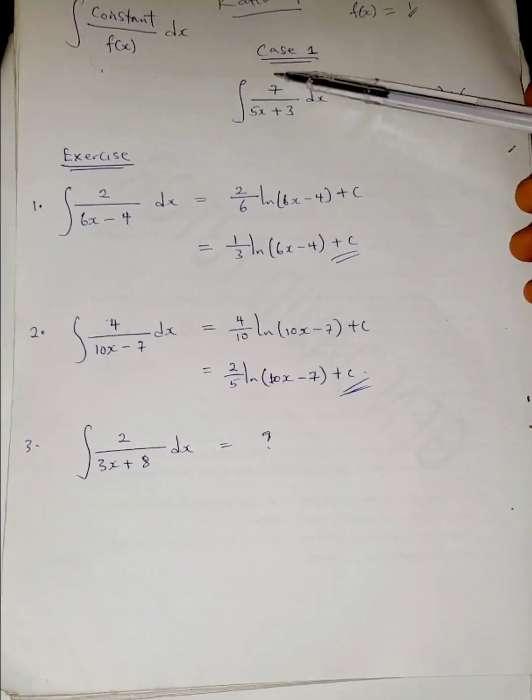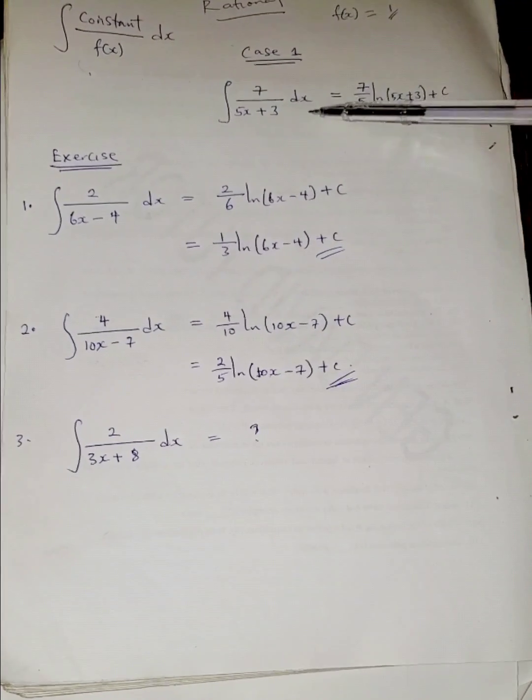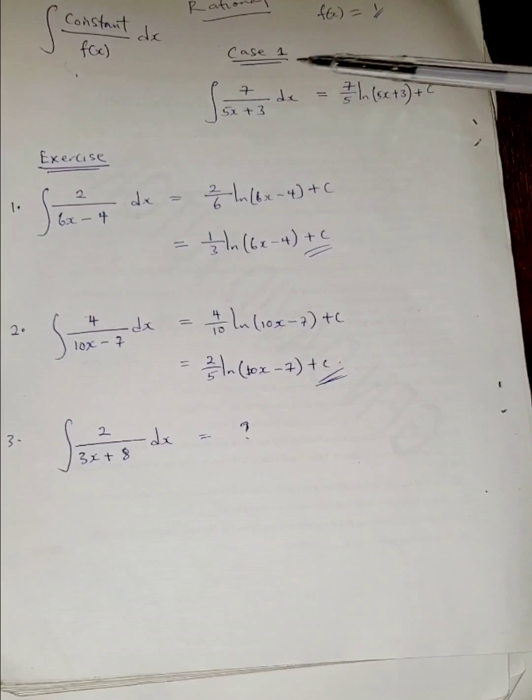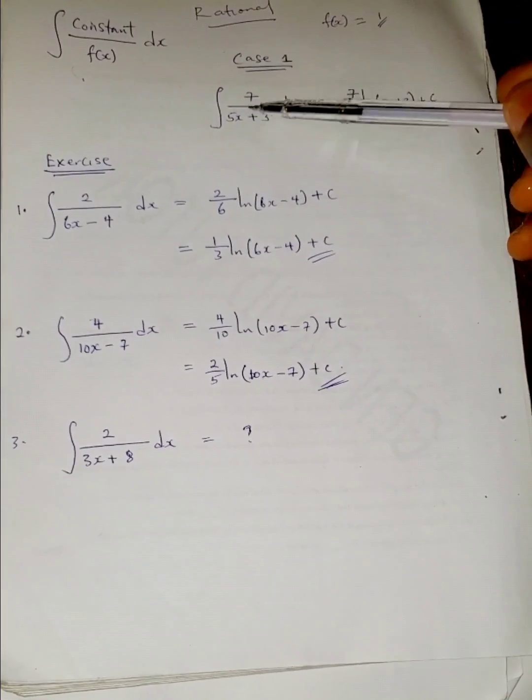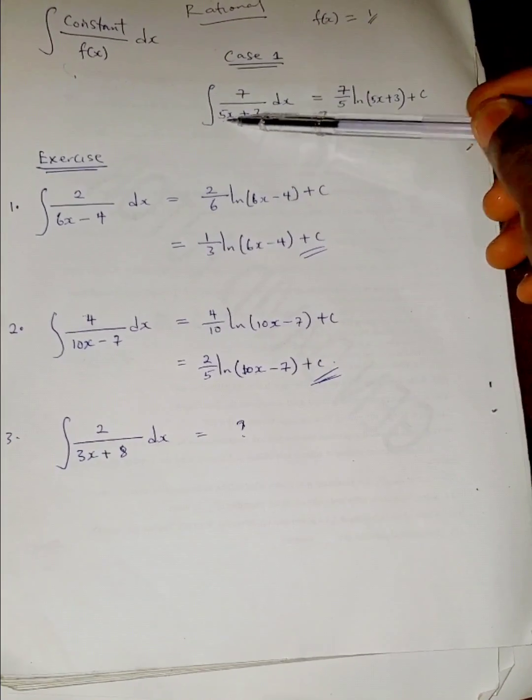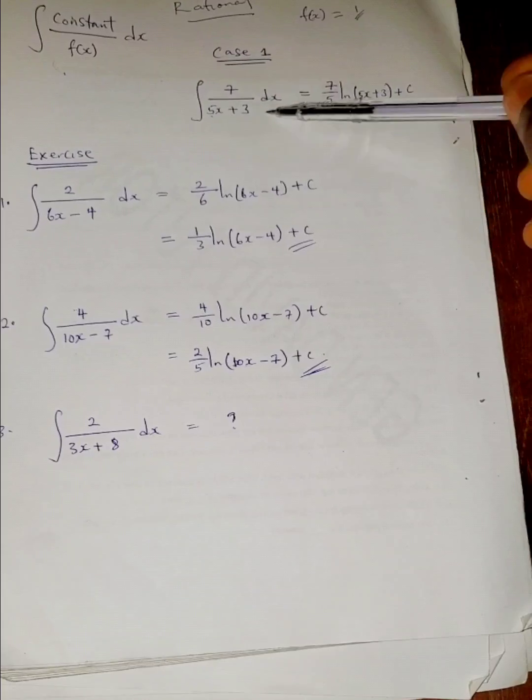Now see, we are given this one like this, 7 over 5x plus 3 dx. So the answer will now be your numerator over coefficient of your denominator, which is 5, ln of all the denominator.